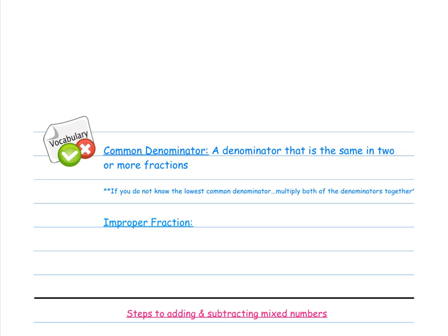Some more language, some more vocabulary to help us out. This process is common denominator, which we've talked about in the last lesson. It's a denominator that is the same in two or more fractions. If you don't know the least common denominator, because you need to get those to add and subtract fractions, then you can just multiply the denominators together.